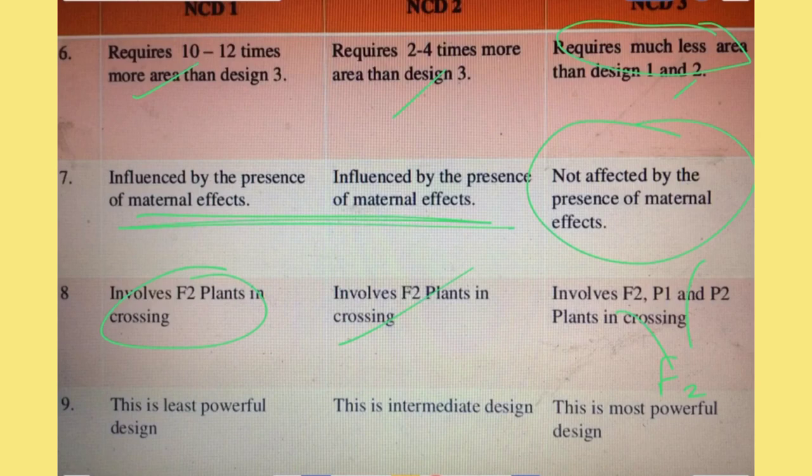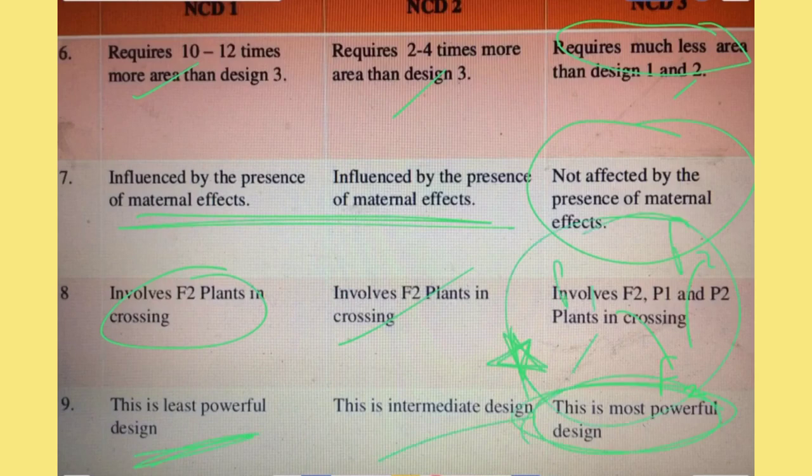In NCD3, all the parents are involved in the crossing program. NCD1 is the least powerful design, NCD2 is intermediate, while NCD3 is the most powerful and most useful design. This covers all the NCD designs and bi-parental mating design.